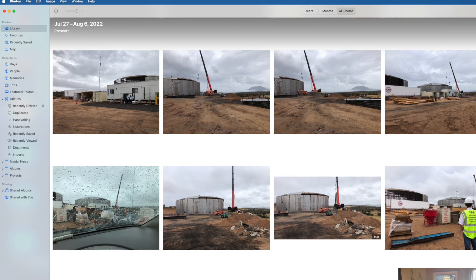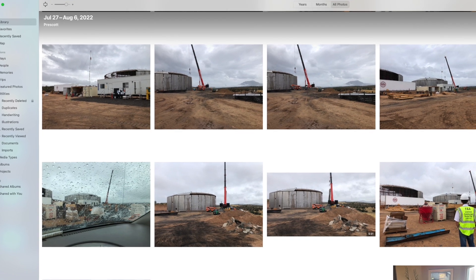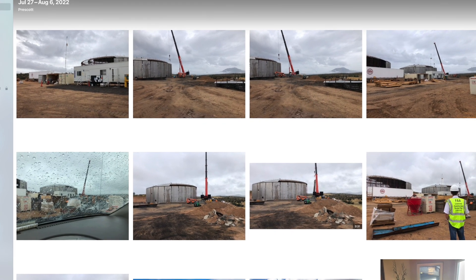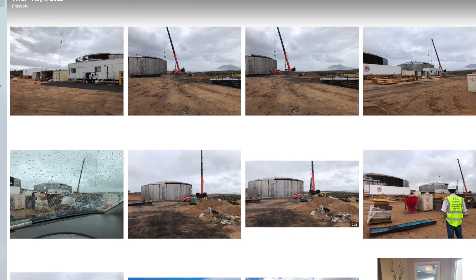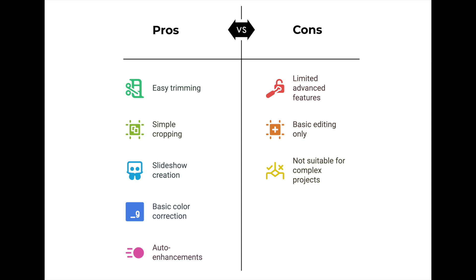Number two, which comes with the Mac M4 now, is the Photos app, and you've got some basic video editing in there as well. You are allowed to trim, crop, and adjust videos. You can create slideshows with video clips, photos, and music. Basic editing tools like color correction and auto enhancements are also included.